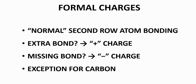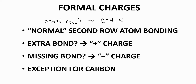Before starting the problems, let's review some ideas. Second row elements, the kind that we see most often in organic chemistry, follow very predictable bonding patterns. If the element satisfies the octet rule, then carbon tends to make 4 bonds, nitrogen makes 3, oxygen 2, and fluorine 1.